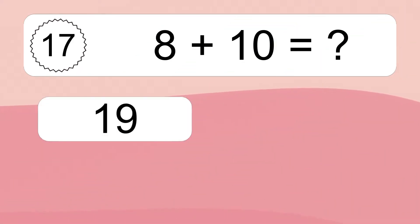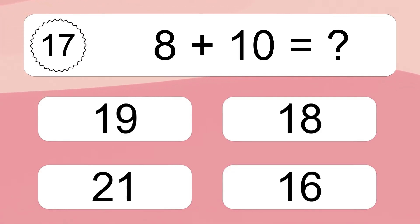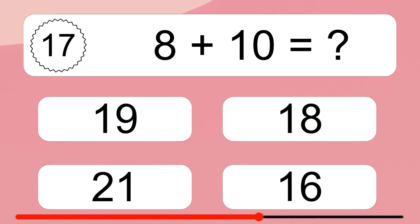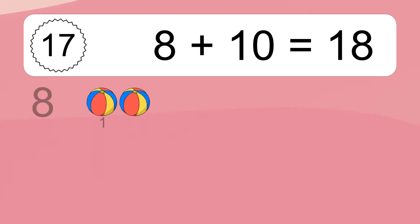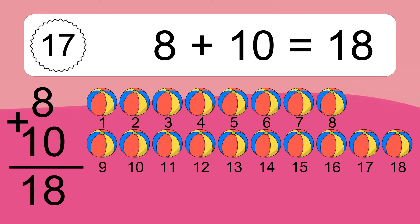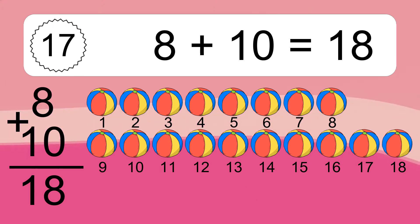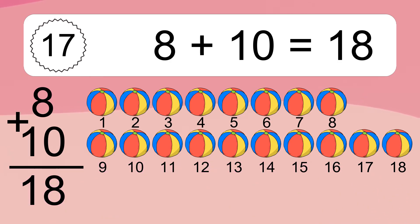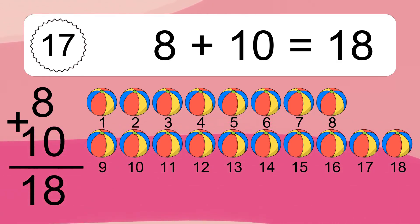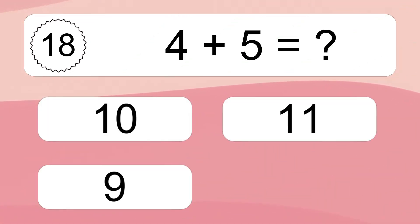8 plus 10 equals 18. Let's count it: 1, 2, 3, 4, 5, 6, 7, 8, 9, 10, 11, 12, 13, 14, 15, 16, 17, 18. 4 plus 5 equals what?